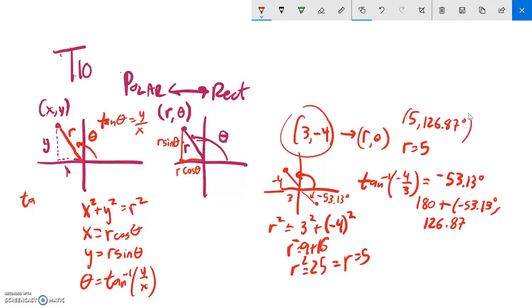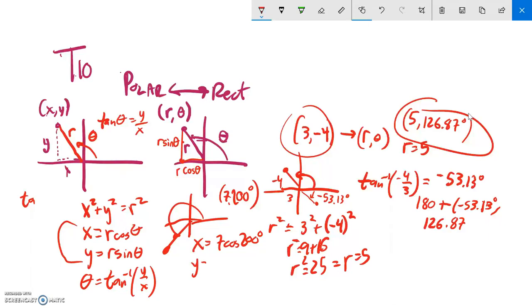How about going the other way? If I have (r,θ) and want to turn it into (x,y), let's say I had the point (7, 200°). 200 degrees is somewhere around here, seven is that distance. Here's my relationship: I know that x is 7 times cosine of 200 degrees. Notice this will take care of my negatives and positives—there's no extra piece I have to do like with the tangent.